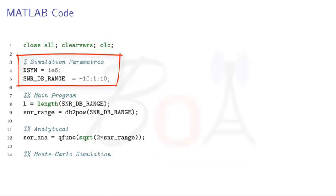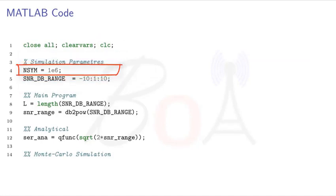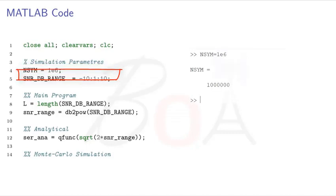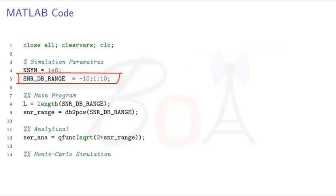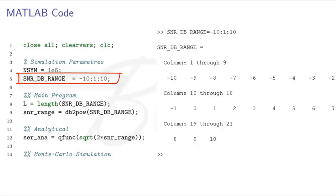Next, we define the simulation parameters that we will be using in this code. The first parameter is the number of BPSK symbols that we want to generate for Monte Carlo simulations. We have kept its value to 1 million, that is 10 raised to the power of 6. The next parameter is the SNR_DB_RANGE which is a row vector of SNR values in decibels for which we want to plot the symbol error rate. In this program, we will consider SNR_DB_RANGE from minus 10 to 10 decibels with an increment of 1 decibel.